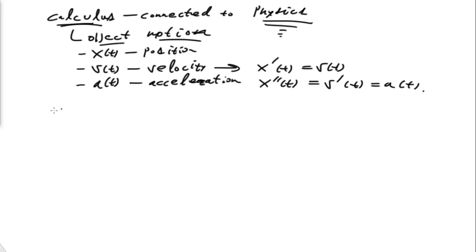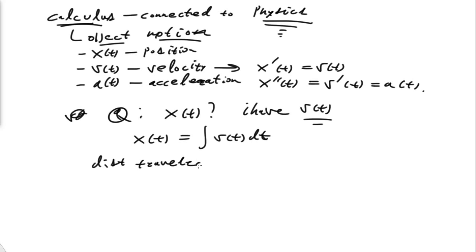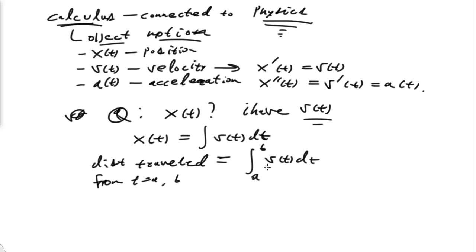To get from one to the other — if I have v of t and want to know x of t, I can get it by taking an anti-derivative. Or if I want to know the distance traveled, I can take a definite integral from time equals a to time equals b of v of t. So calculus gives us all sorts of tools to describe those things.